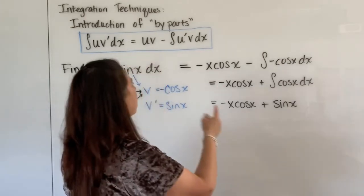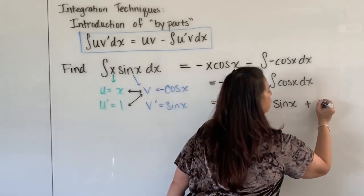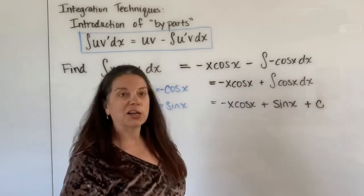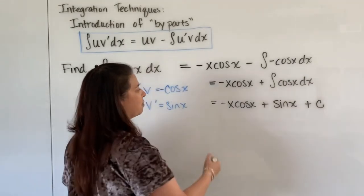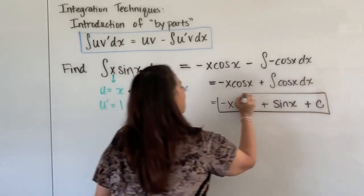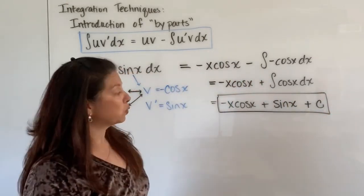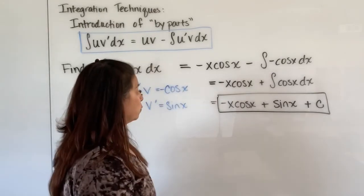Now because I had an indefinite integral to begin with with no boundaries I still have to do my plus c here on the end of that as the constant since we don't know what the boundary values are. And so this is now my actual integral using by parts to help figure out what that integral would be.